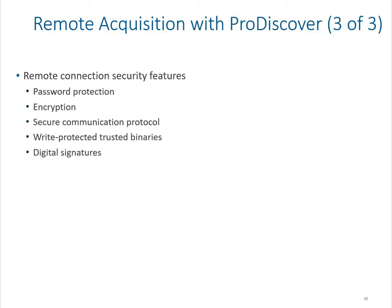ProDiscover server can run in stealth mode and can change its process names to appear as operating system functions, so even if the suspect is using the same computer they won't detect it. Security features include password protection — if the suspect discovers and tries to kill the process, a password is required. It also operates in encrypted mode, secures communication and protocols with the server, write-protects trusted binaries, and uses digital signatures to verify that tools have not been compromised.